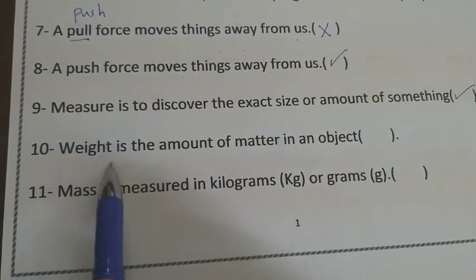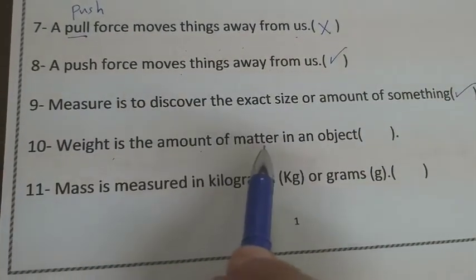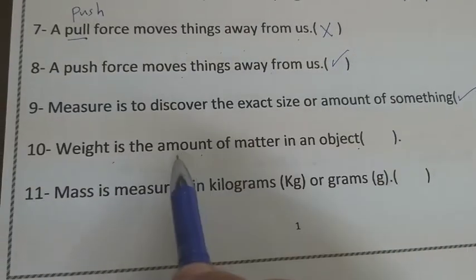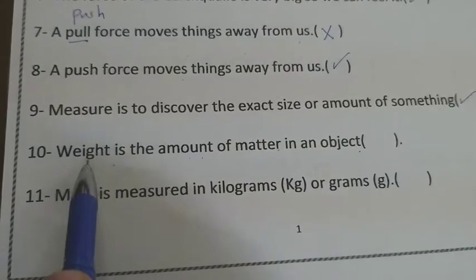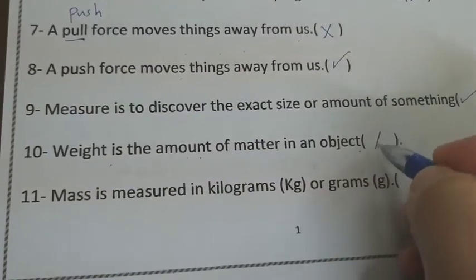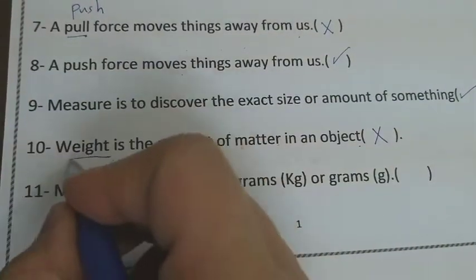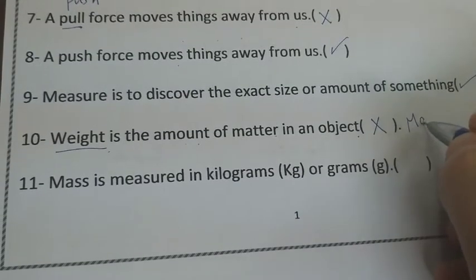Number 10, weight is the amount of matter in an object. You remember this? The amount of matter in any object is called what? It's called weight or mass? Mass. So this will be false. Underline weight and write mass.